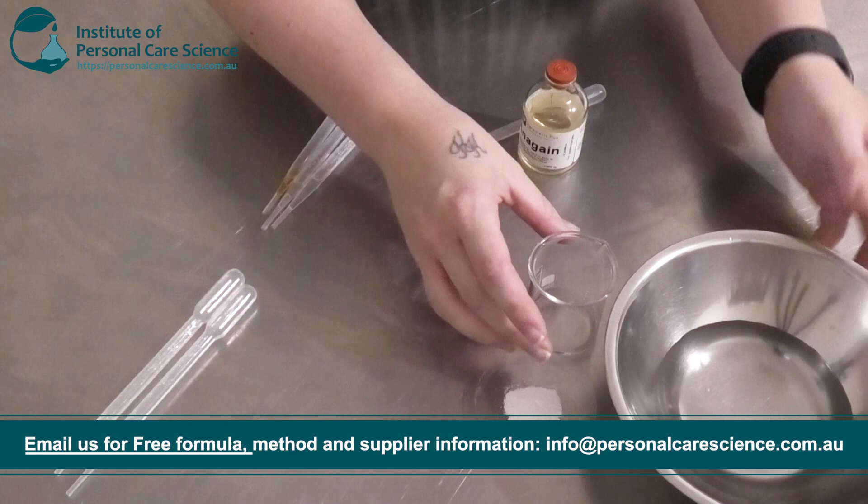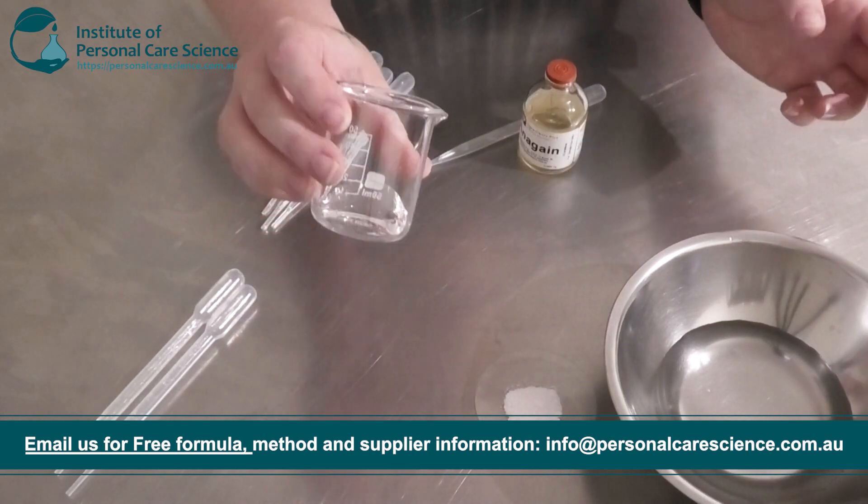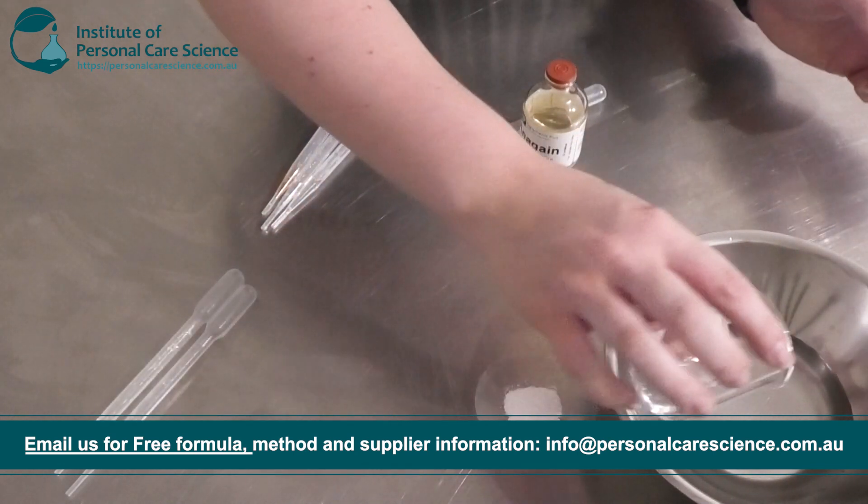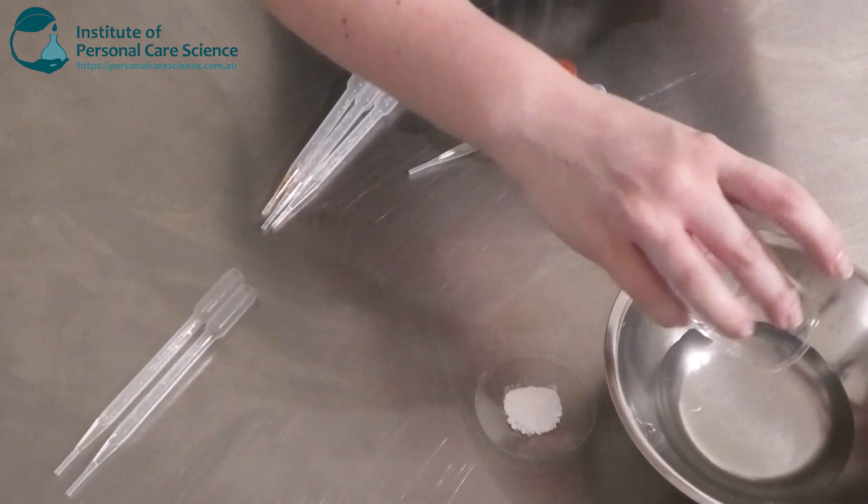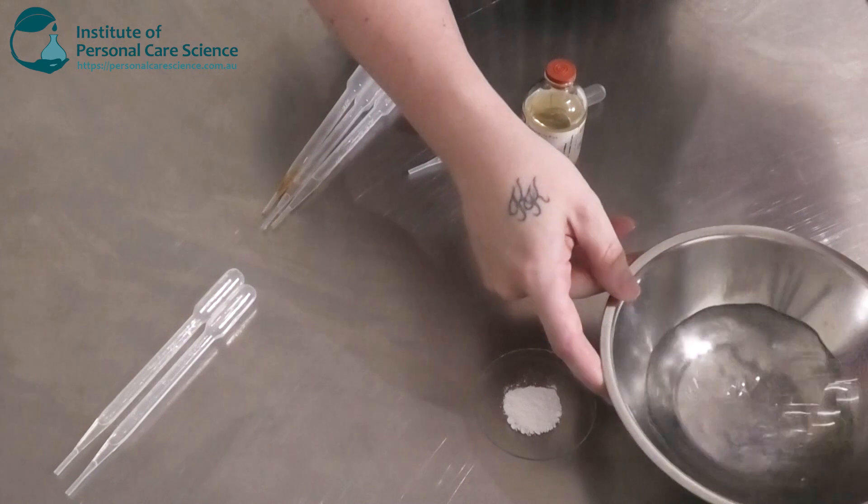Okay so I'm going to add my phase A ingredients together. I've chosen to go with propanediol as my humectant as this is nice and light. It's not sticky and tacky like glycerin. I'm going to give that a stir.